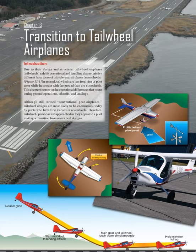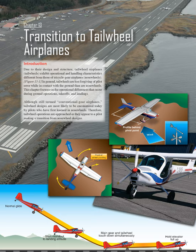Chapter 13: Transition to Tailwheel Airplanes. Due to their design and structure, tailwheel airplanes exhibit operational and handling characteristics different from those of tricycle gear airplanes. In general, tailwheels are less forgiving of pilot error while in contact with the ground than nosewheels. This chapter focuses on the operational differences during ground operations, takeoffs, and landings, approached as they appear to a pilot making a transition from nosewheel designs.